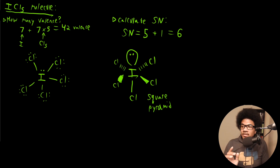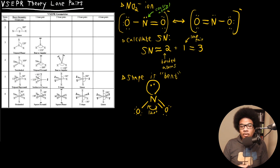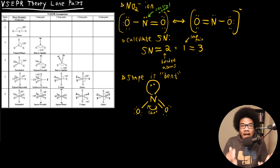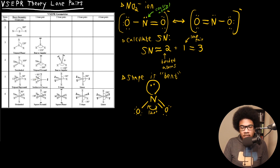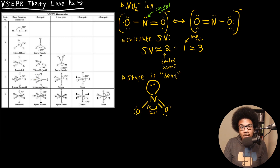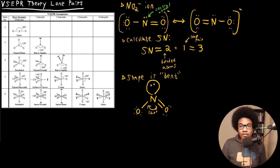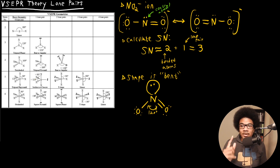The two big takeaways are: first, lone pairs take up real space and must be accounted for in three-dimensional geometry. Second, if you have this VSEPR chart readily available, you'll be able to determine how the structure accommodates lone pairs, since they're still involved in electron repulsion and must be included in the three-dimensional structure. VSEPR theory accounts for this, and these tables let you figure out how the shape accommodates a given number of lone pairs.